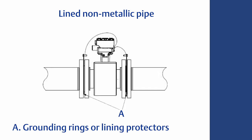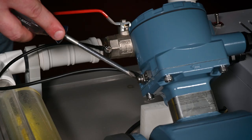For lined metallic pipe or non-metallic pipe, connect straps to grounding ring or lining protector. If necessary, connect grounding ring or lining protector to local earth ground at the sensor.